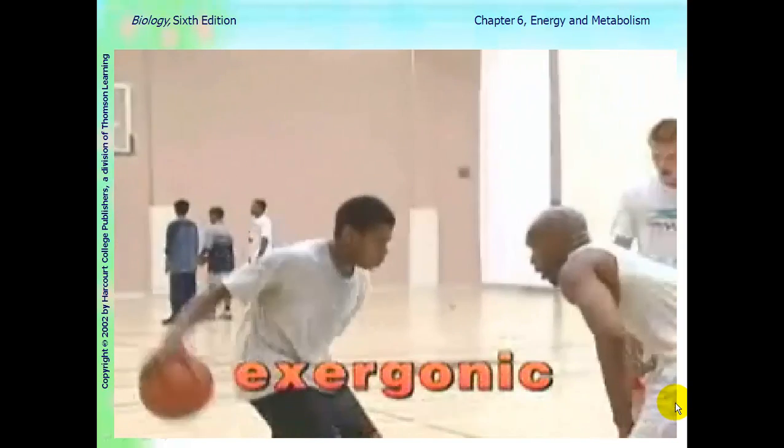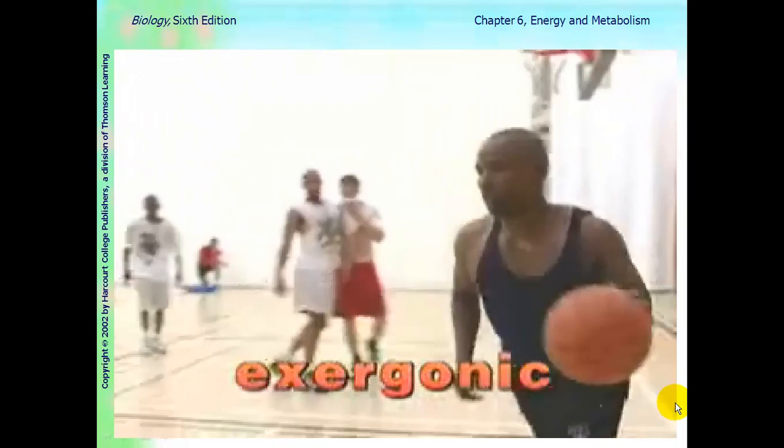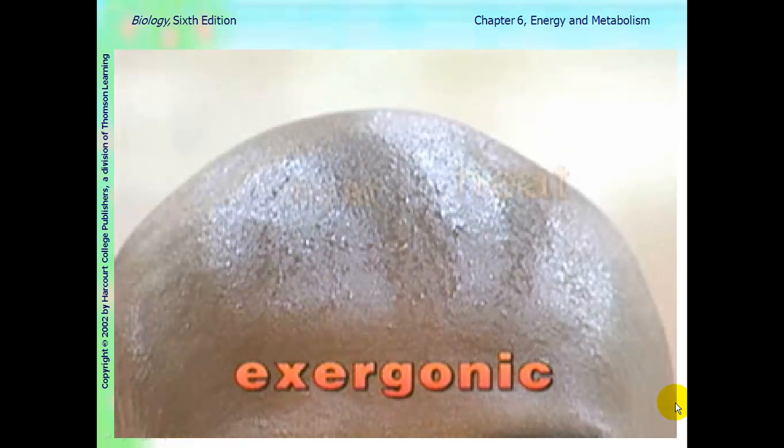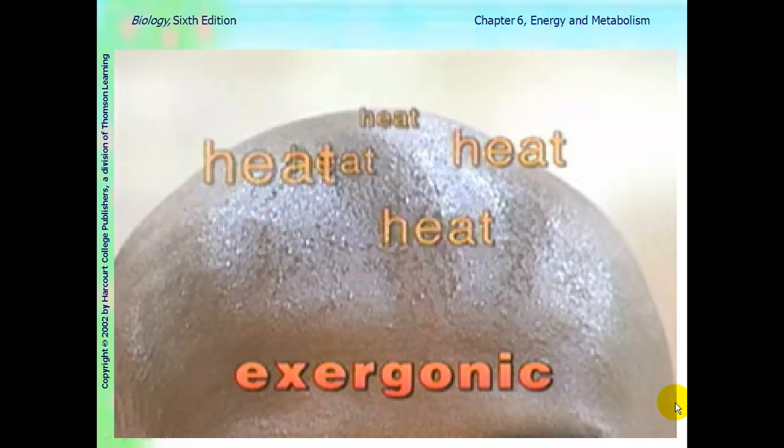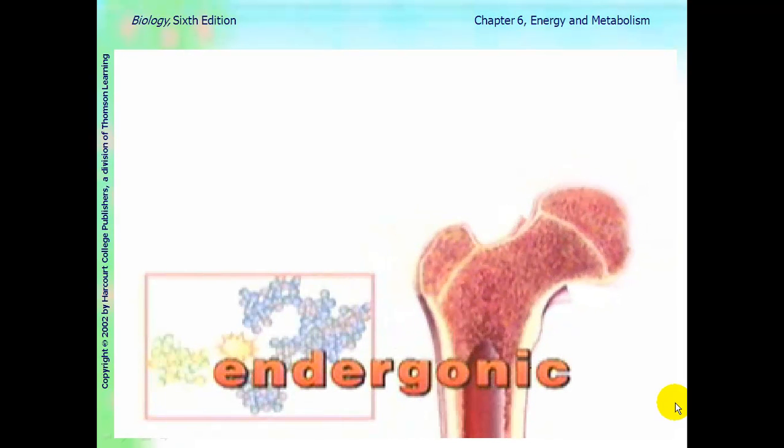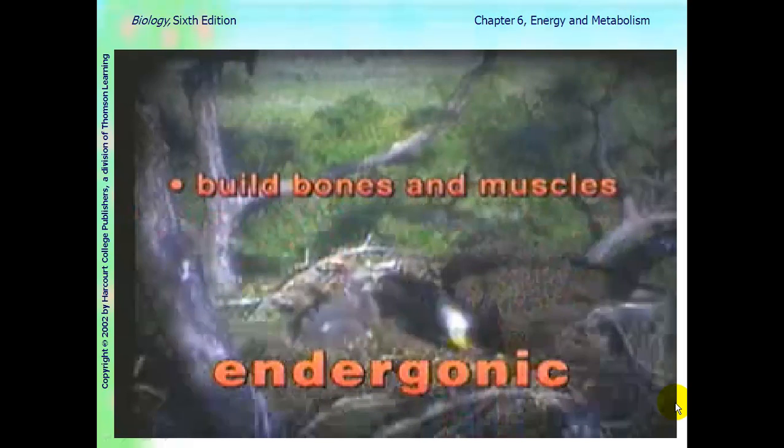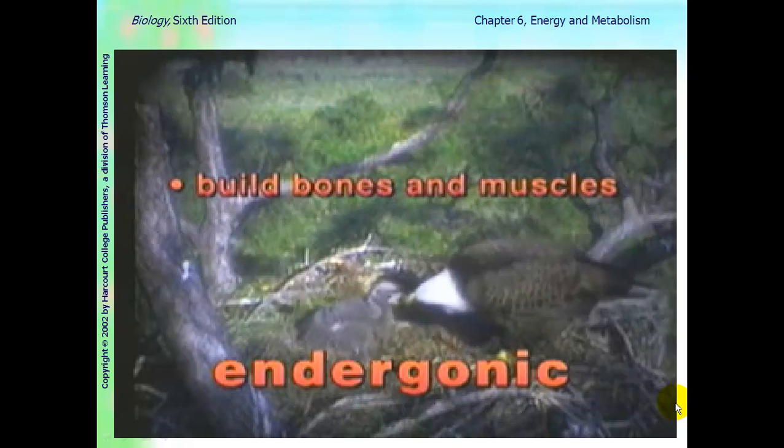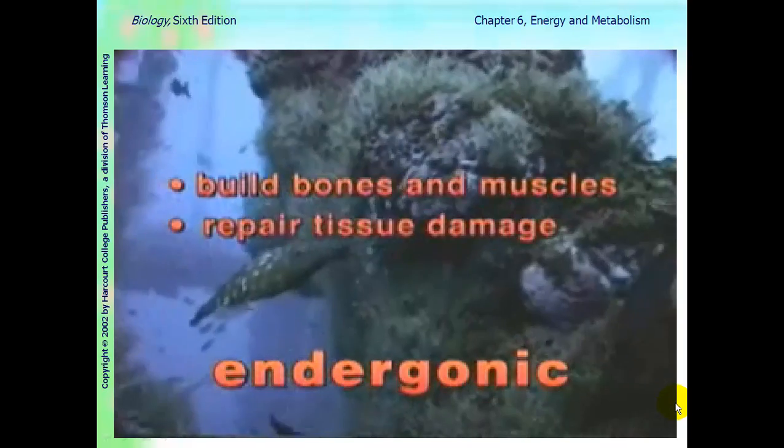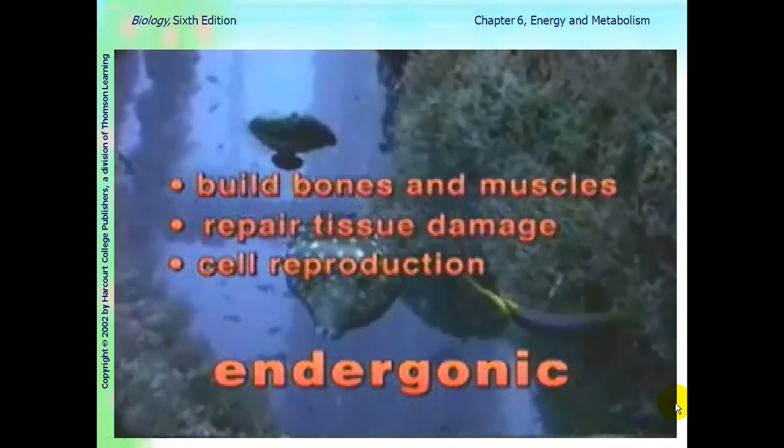Exergonic reactions are happening in the bodies of these basketball players. Chemical reactions are going on in their muscle cells, which release the energy that contracts their muscles and propels them. The heat that their bodies give off is another form of energy, and a byproduct of those reactions. Endergonic reactions put molecules together to build muscles, bones, and other cells. The growing process is an obvious example. Cells also constantly need energy to repair damage and reproduce. These are endergonic processes.